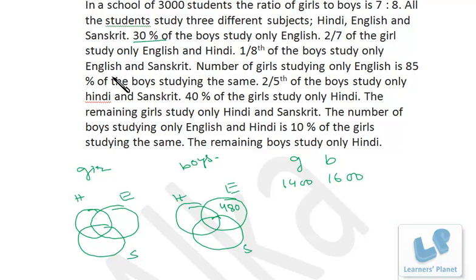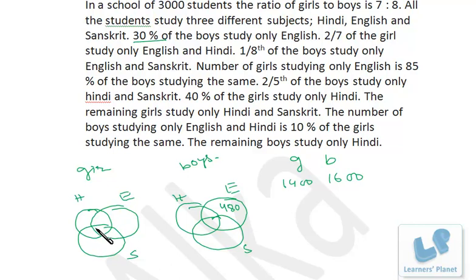2/7 of the girls study only English and Hindi. 2/7 of 1400 is 400. They study only English and Hindi, which will be this portion, so that's 400.